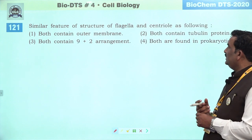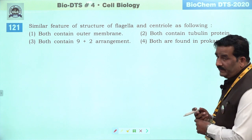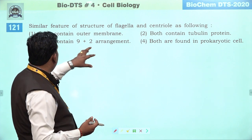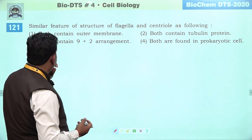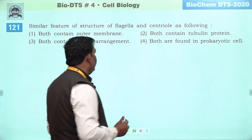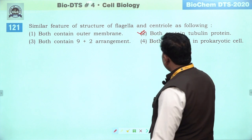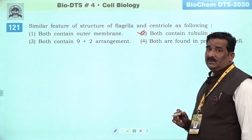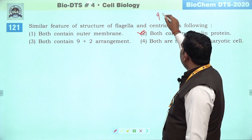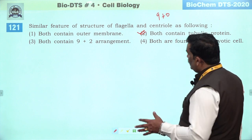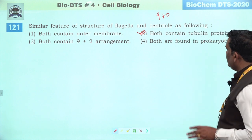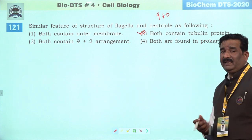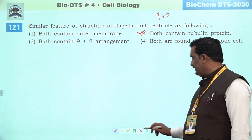Next question: similar feature of structure of flagella and centriole. Donon mein yahan flagella ka jo part hai aur centriole ka jo part hai, woh dono hi tubulin protein ke bane hain. Agar unke internal structure ki baat karein toh 9 plus 2 ratio jo hai woh flagella ka hai, lekin centriole mein wahi ratio 9 plus 0 hota hai. Outer membrane centriole mein nahi hai, flagella mein hai. Both found in prokaryote — bilkul galat hai, prokaryote mein nahi presence hote. Second right answer hai.